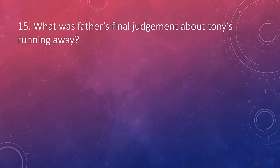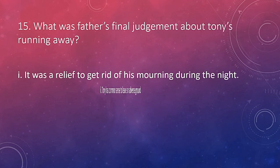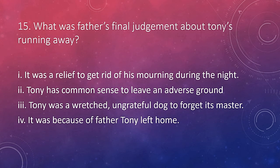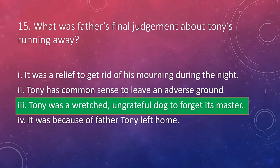Question number 15: what was father's final judgment about Tony's running away? Father's behavior is a criticism about the elders. He does not accept their fault in making Tony leave and run away. He rationalizes what he had done and accuses Tony of being ungrateful. Ironically, the opposite thing has happened. Father's judgment was that Tony was a wretch, an ungrateful dog to forget its master.